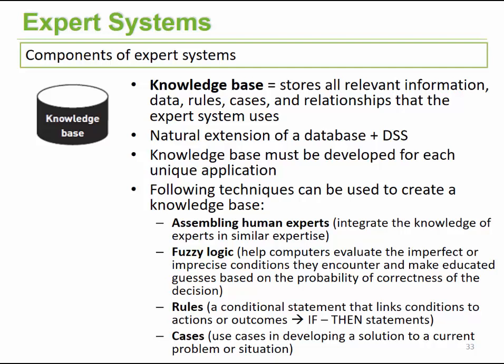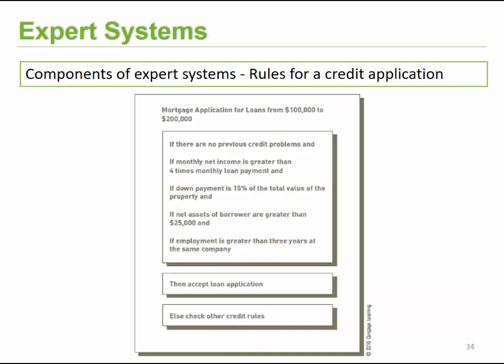Where do we find expert systems? One example includes banks. If you want to apply for a home loan, they would ask you a few questions, and based on those answers, they would determine whether you would be a good candidate or whether you might be a risk for the bank in order to be awarded a loan.